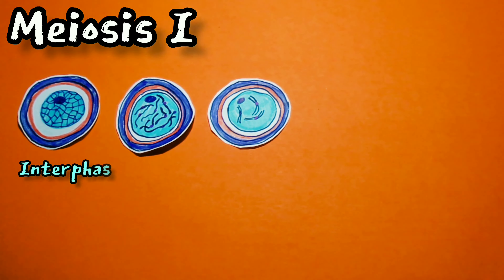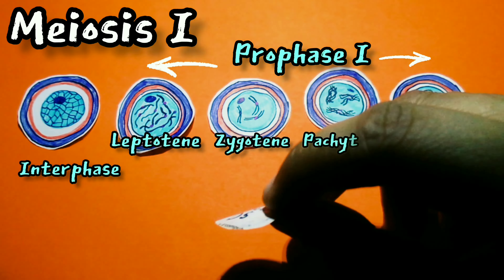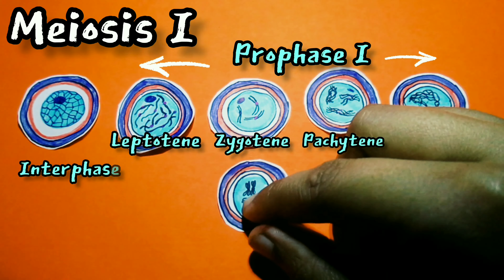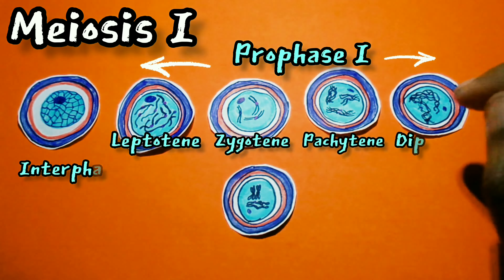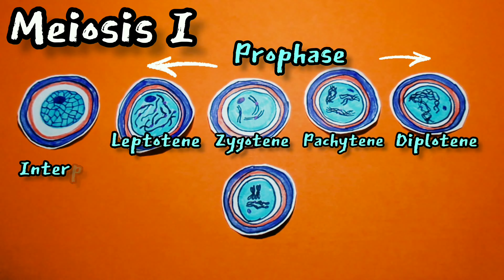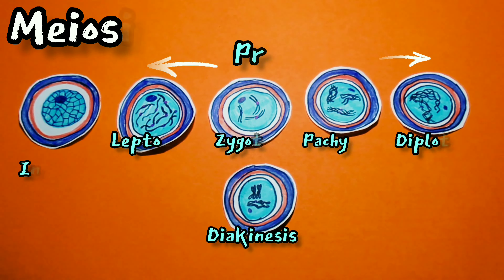Meiosis one consists of interphase and prophase one, which is further subdivided into leptotene, zygotene, pachytene, diplotene, and diakinesis, then metaphase one, anaphase one, telophase one, and cytokinesis.